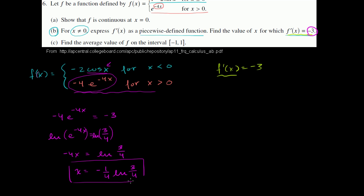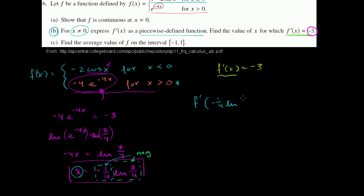We need to verify that this x is indeed greater than 0 so that we can use this case. It might look like a negative number, but remember: the natural log of 3 fourths is negative, since 3 fourths is less than 1. So this part is negative, and negative one fourth is also negative — a negative times a negative gives a positive value. So x is positive, confirming we used the correct case. Therefore x equals negative one fourth times the natural log of 3 fourths, and f prime of that value equals negative 3.